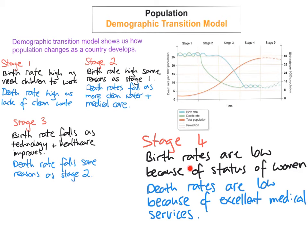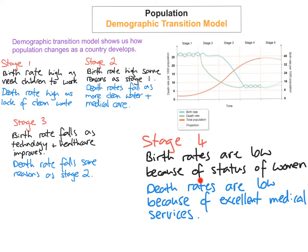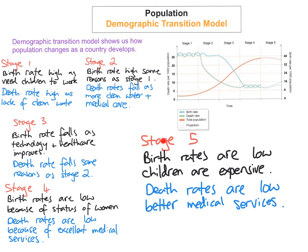In stage 4, birth rates are low because the role and status of women have changed. Women are now working outside the home and are not focused on that traditional role of just looking after children. There's more family planning, they're better educated, and some women are leaving having children until later in life so they don't have as many. Death rates are also low because of excellent medical services, improved technology, and overall better sanitation and access to clean water.